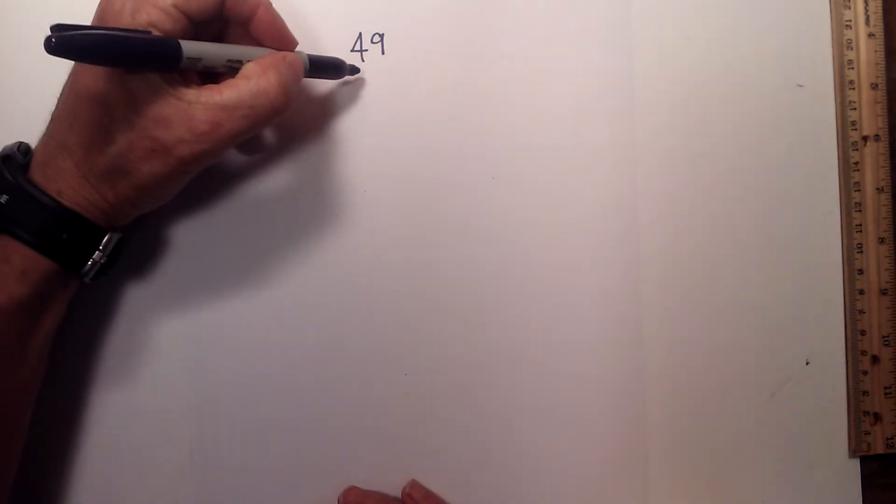The prime factorization of 49 and 88. Prime factorization involves finding which prime numbers multiplied together equal the original number. Let's get started with 49.